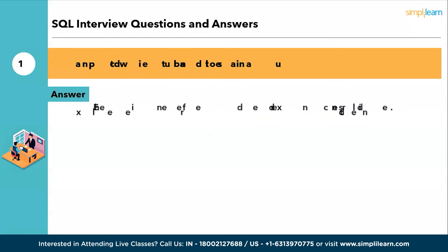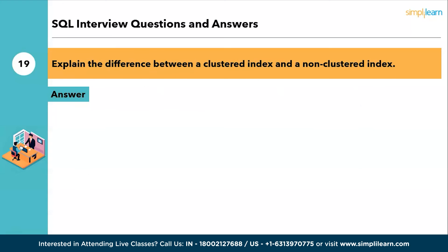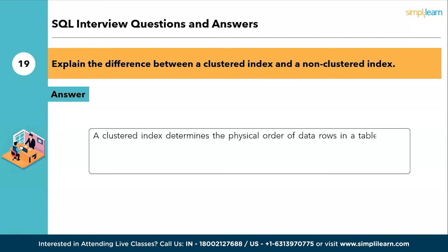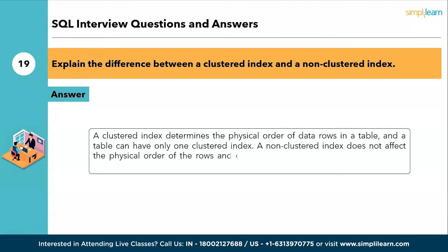The nineteenth question: explain the difference between a clustered index and a non-clustered index. A clustered index determines the physical order of data rows in a table, and a table can have only one clustered index. A non-clustered index does not affect the physical order of the rows and can be created on columns other than the primary key.